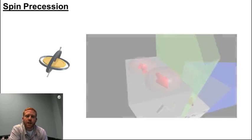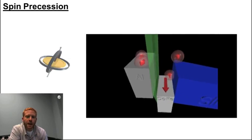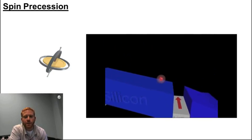In spin transport devices, we apply a magnetic field perpendicular to the injected spin direction, but parallel to the transport direction caused by electric fields, and the spin will precess in a plane.